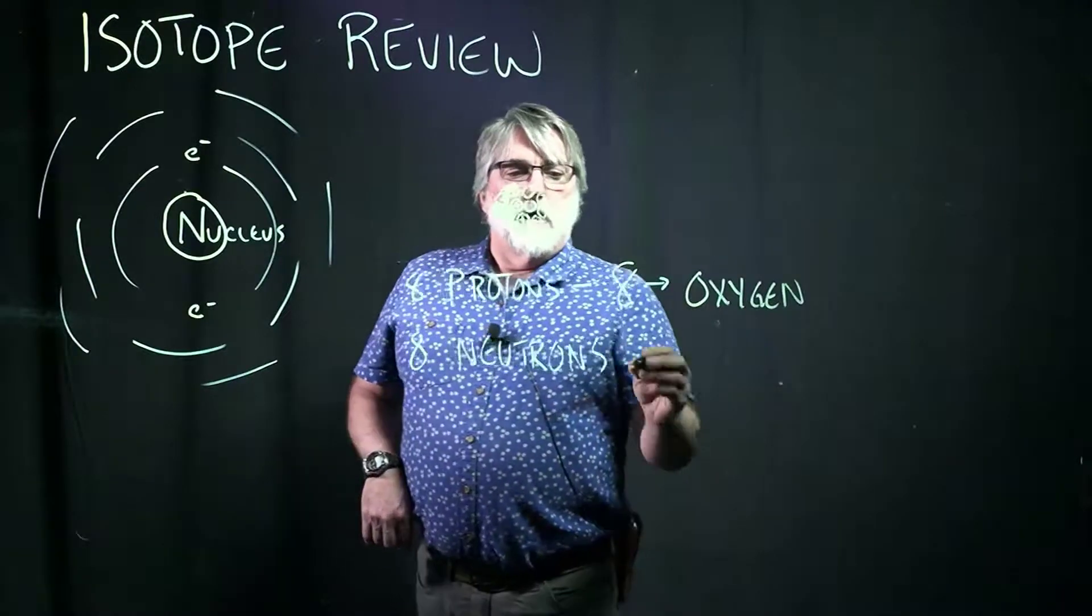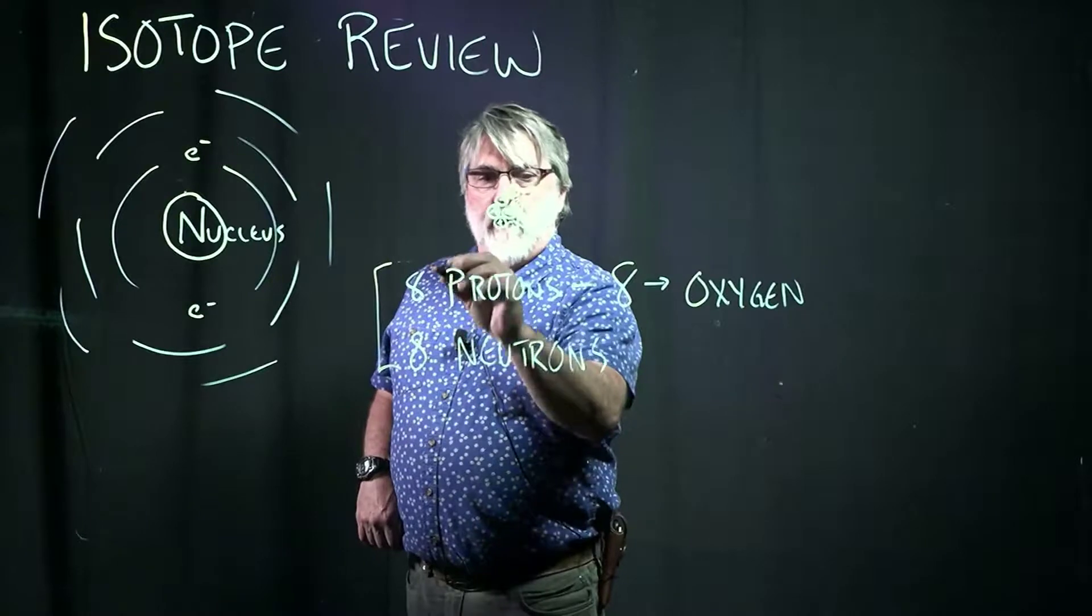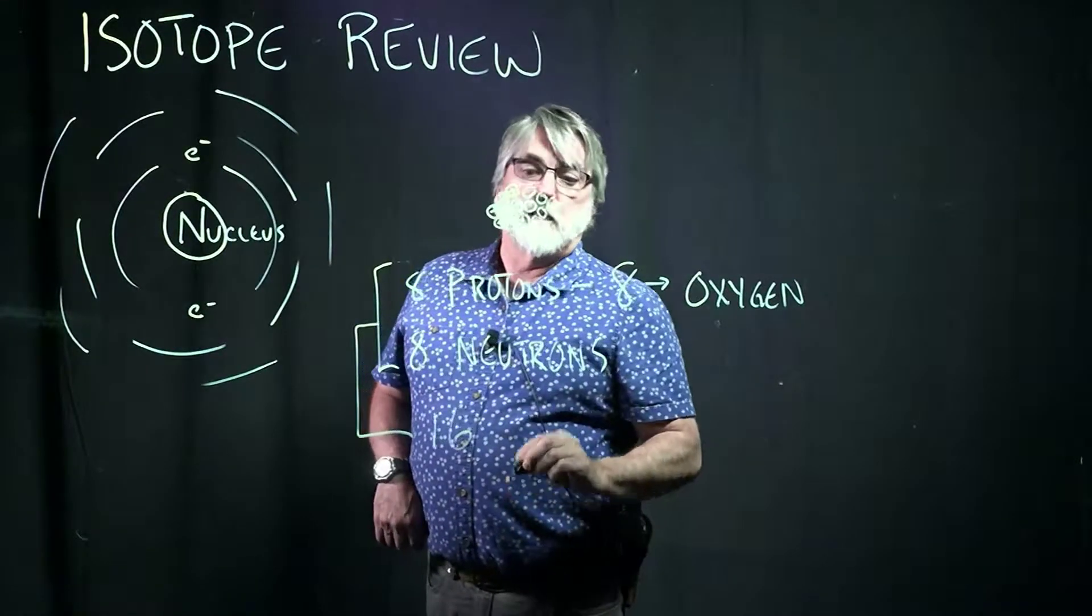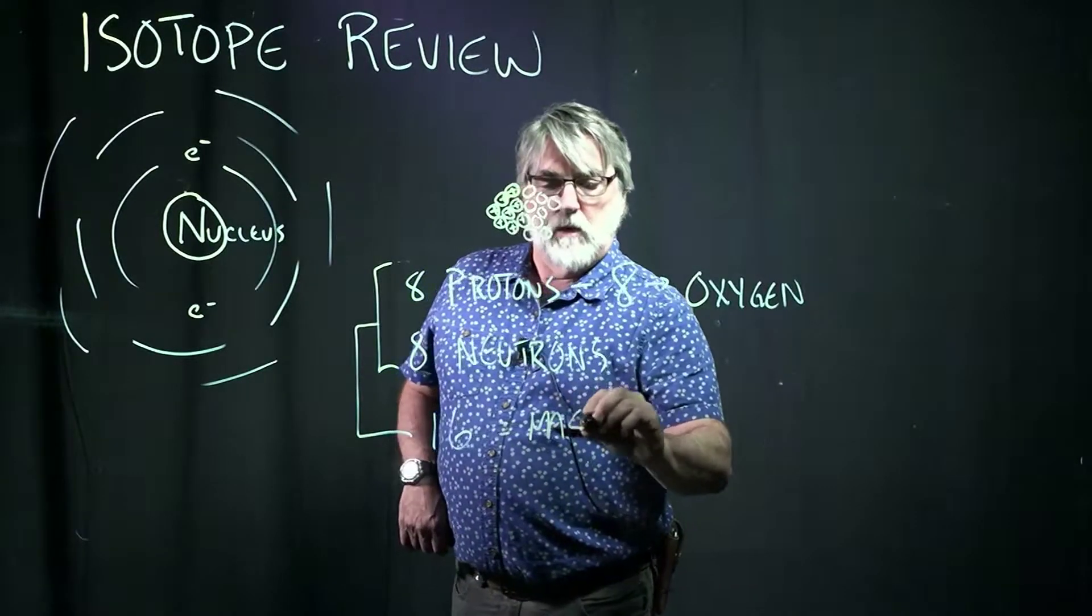The number of neutrons plus the number of protons, if you add those up, you get 16, and that gives us the atomic mass number, or the atomic weight.